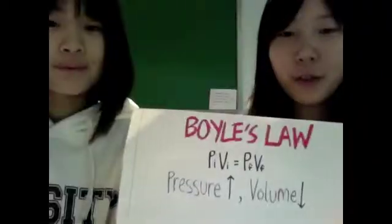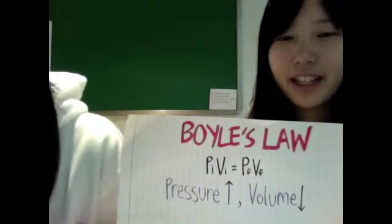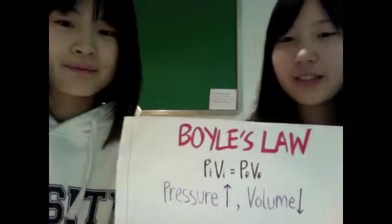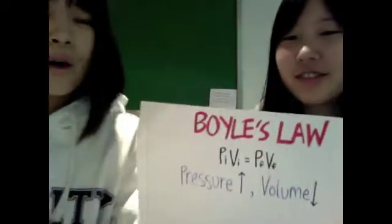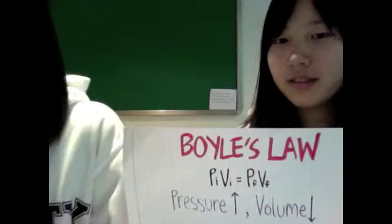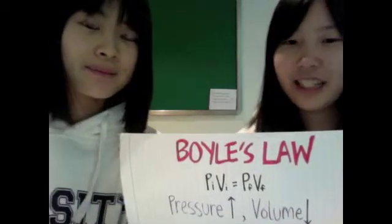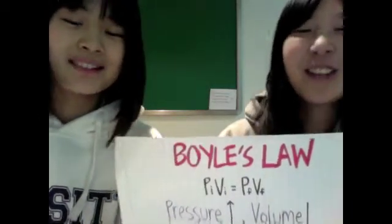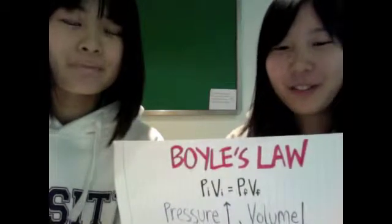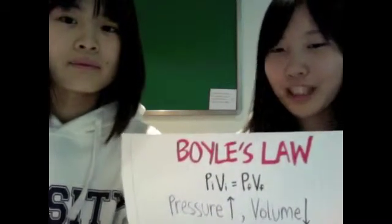This is the formula for Boils Law: P-I-V-I equals P-F-V-F. So what are I and F? I stands for initial and F stands for final. The initial pressure and volume are proportionate to the final pressure and volume.